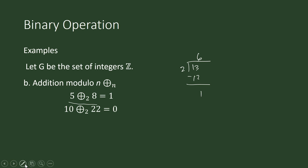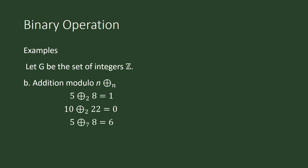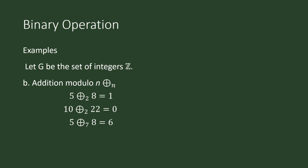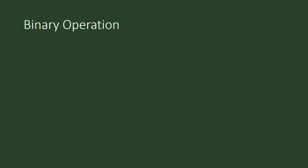10 plus 22 modulo 2 is equal to 0, because the sum is an even integer and when you divide it by 2 the remainder is 0. And 5 plus 8 modulo 7 is equal to 6, because 5 plus 8 is 13, and when you divide 13 by 7 the remainder is 6. So we have a clear rule for the operation of addition modulo n.